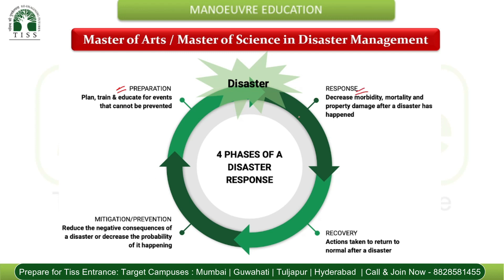Preparation means to plan, train, and educate for events that cannot be prevented — so we can educate and spread awareness even when we can't prevent a crisis. Response means to decrease mortality and property damage after a disaster has happened. Immediate response to fix any crisis or disaster is equally important.